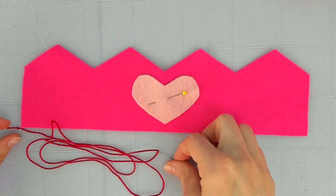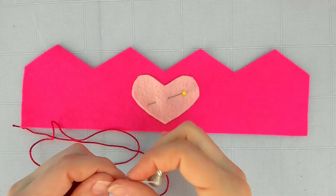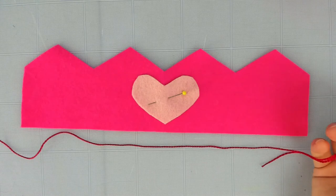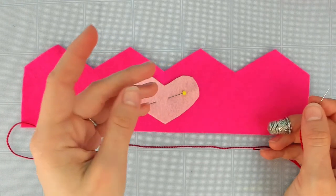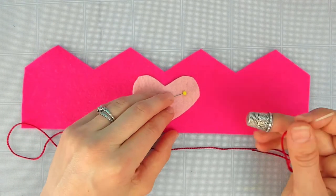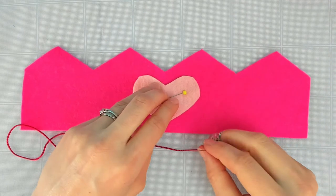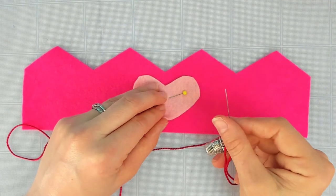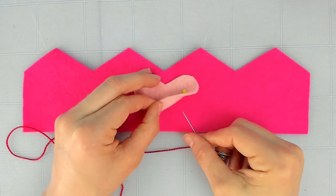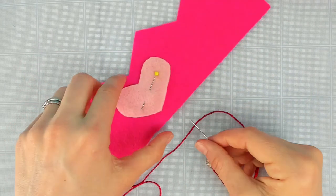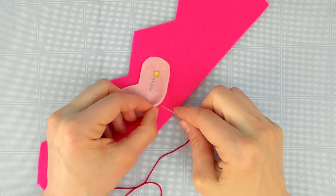So your first step is to put a knot in the end of your thread. I'm using a pretty thick embroidery thread to make it easy for you to watch this on the camera. You don't need to go this thick. So if I want a clean finish I'm going to hide my knot in between my two pieces of fabric here.